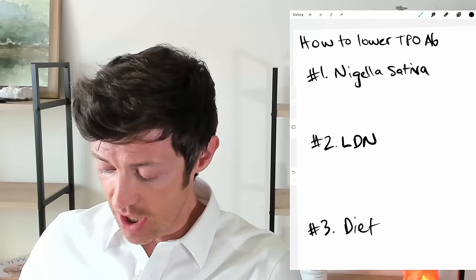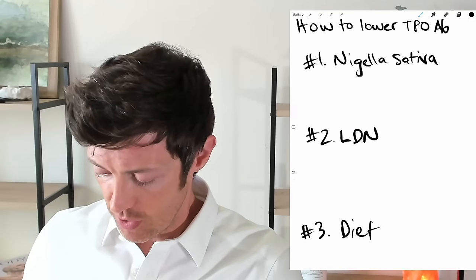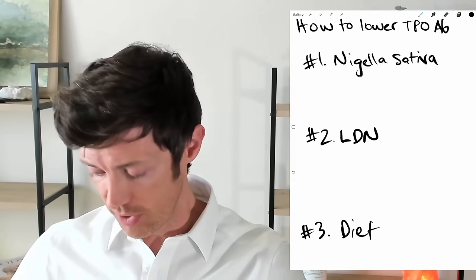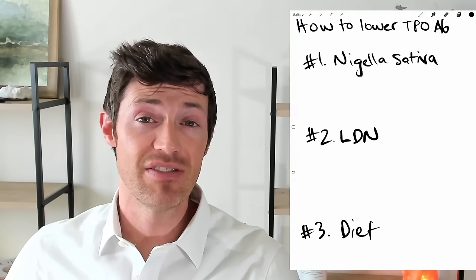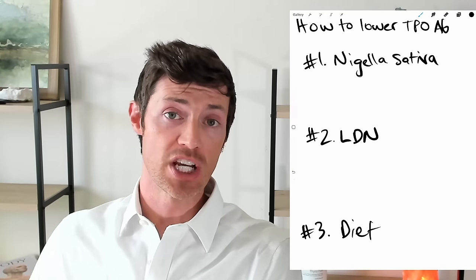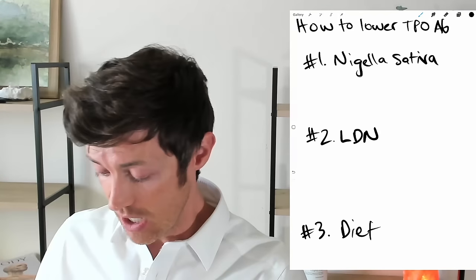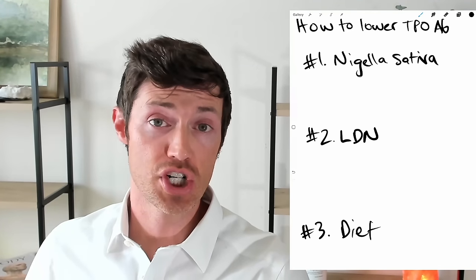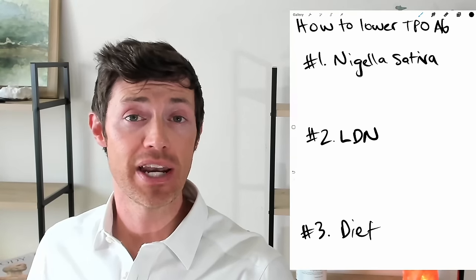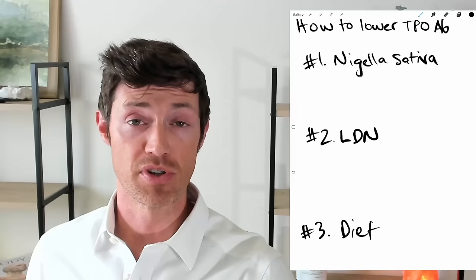So we're going to talk about six treatments — if one doesn't work, you can try the others. It's going to take some element of trial and error to figure out what works best for you. The first one is Nigella sativa. Nigella sativa is a plant that produces black seeds, and from black seeds we cold press them and extract black seed oil. The reason we're talking about this first is because it has a double-blind placebo-controlled trial showing effectiveness in treating Hashimoto's.